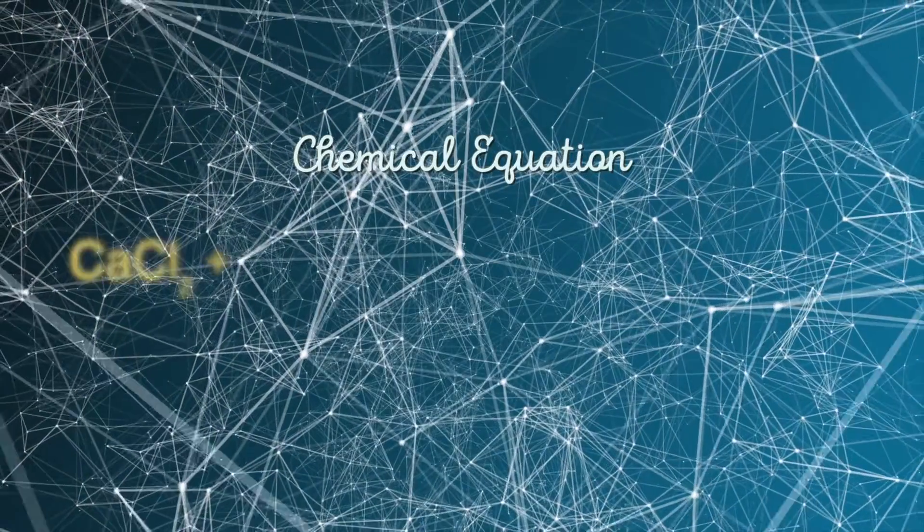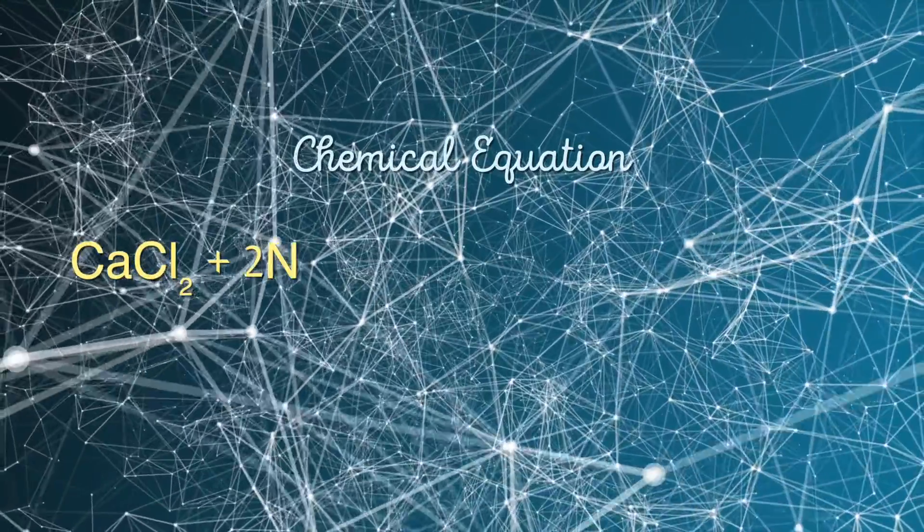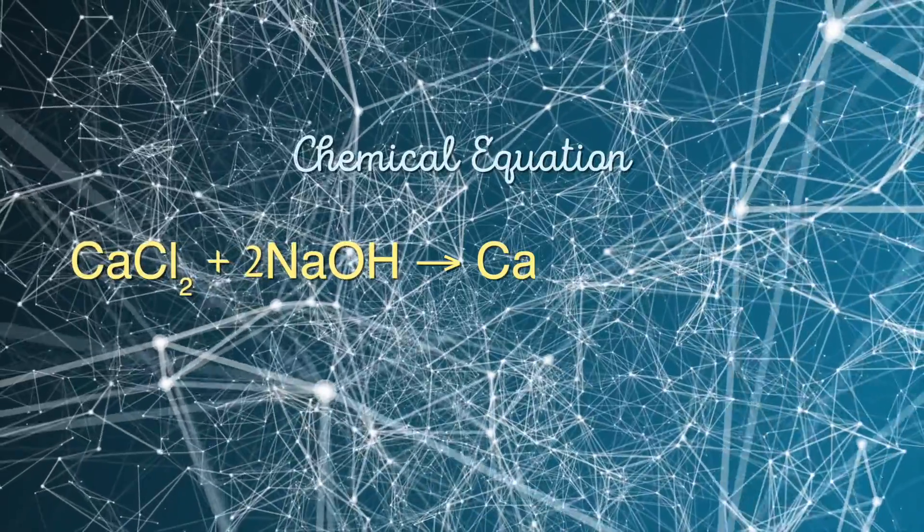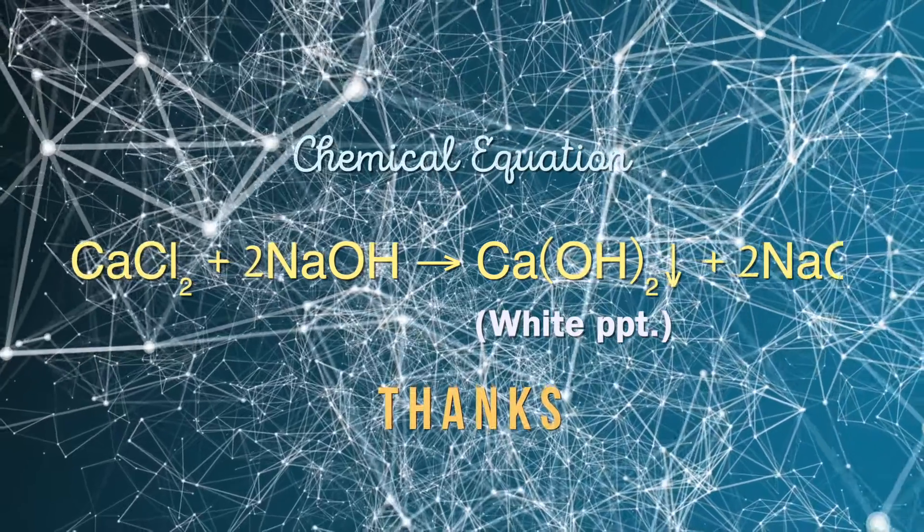So when calcium chloride reacts with sodium hydroxide, it will produce insoluble calcium hydroxide, which produces a white precipitate along with sodium chloride.